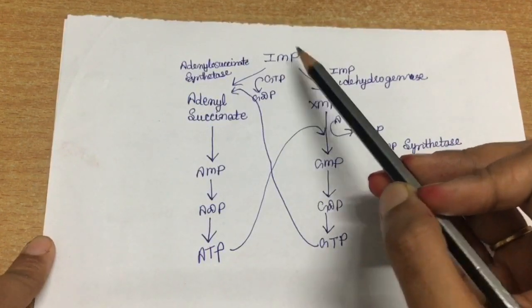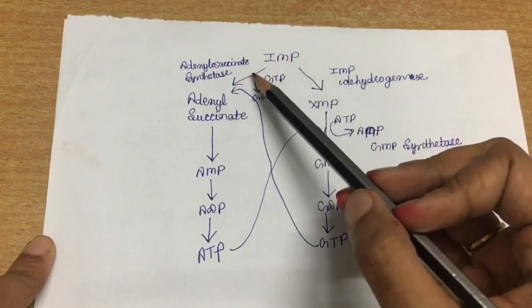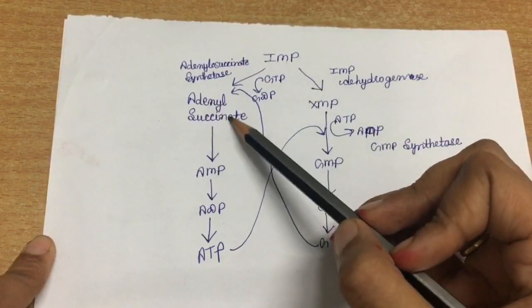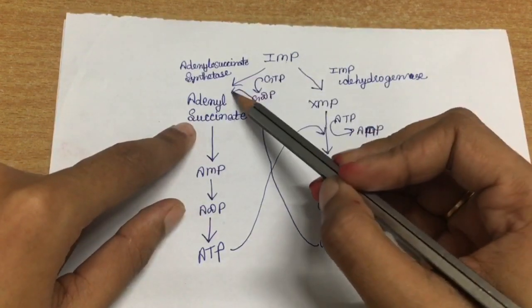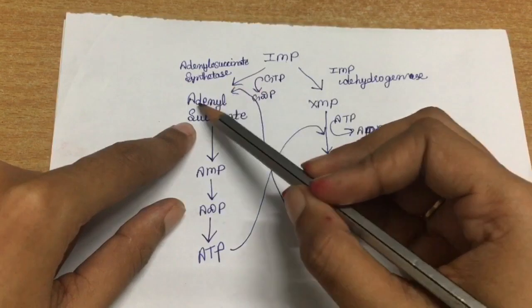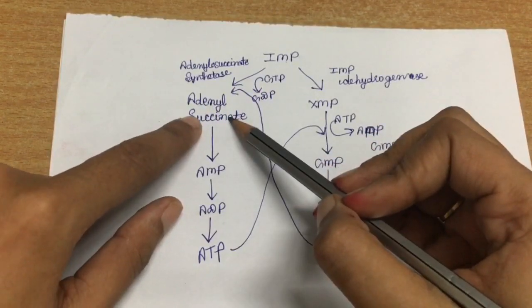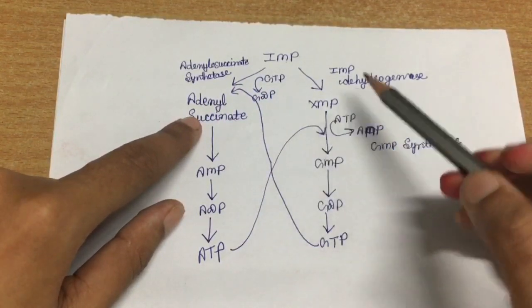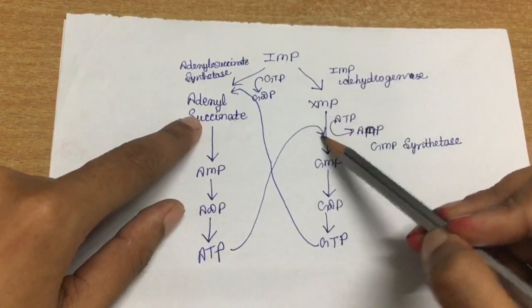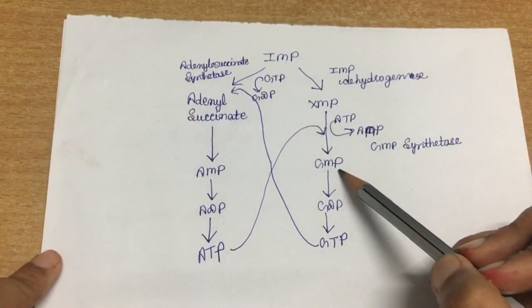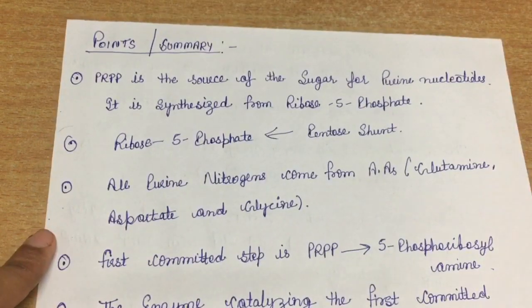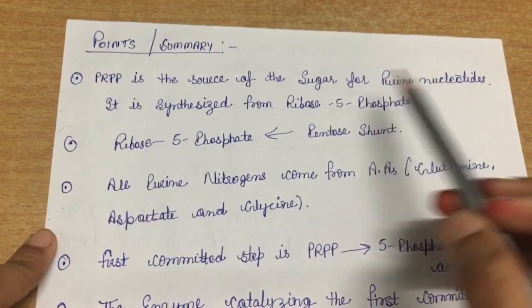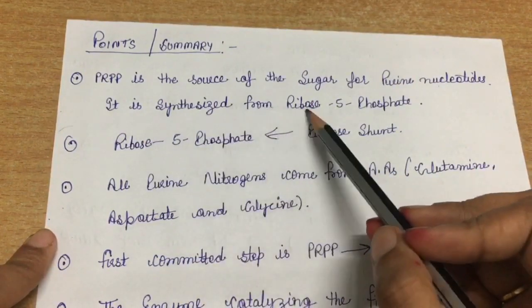This is a closer picture of the branched pathway. IMP adenylosuccinate synthetase converts IMP into adenylosuccinate, and GTP acts as a co-substrate with IMP for the production of adenylosuccinate. ATP acts as a co-substrate with XMP for the production of GMP. PRPP is the source of the sugar for purine nucleotides, and it is synthesized from ribose-5-phosphate, which comes from the pentose shunt pathway.